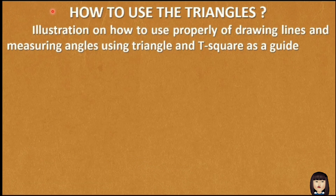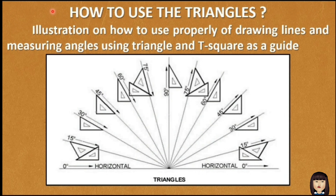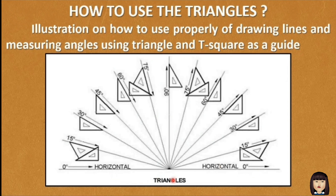To use the triangles properly for drawing lines and measuring angles, use the triangle and t-square as a guide. For horizontal lines at 0 degrees, place the t-square along the board. You can then use the two types of triangle — the 45 by 45 degrees and the 30 by 60 degrees — to make 15 degrees, 75 degrees, and 90 degrees using the right angle.